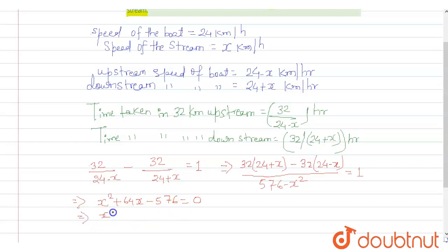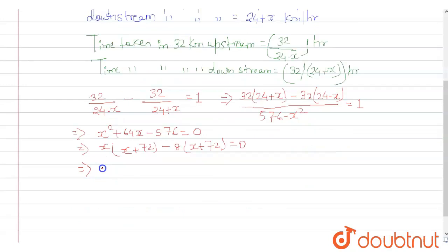Factoring the quadratic equation: (x - 8)(x + 72) = 0. Therefore, x equals 8 or x equals -72.